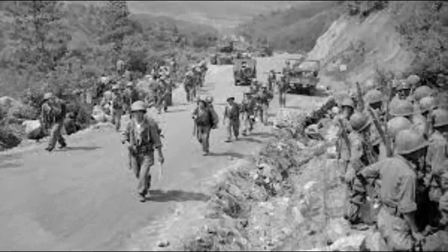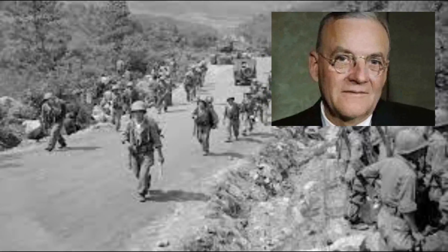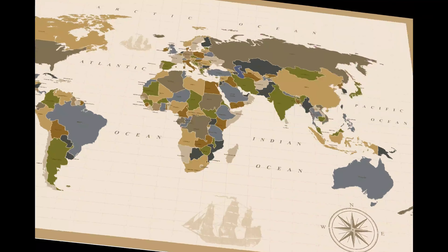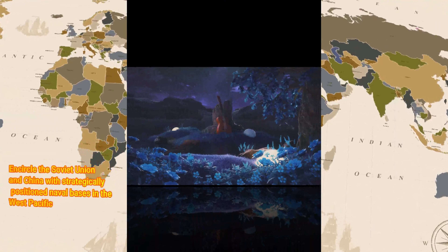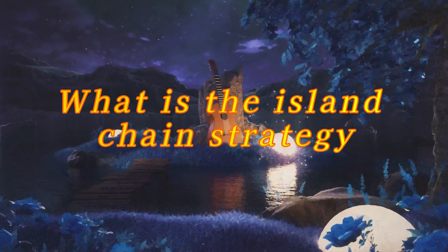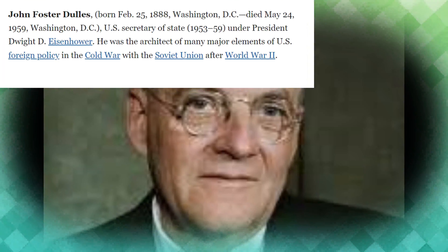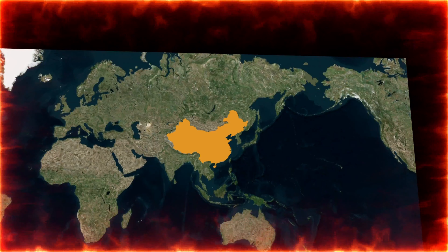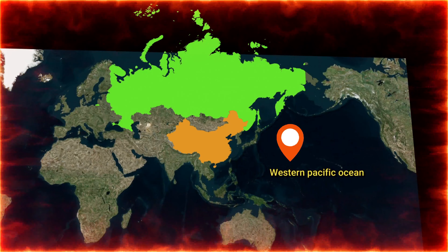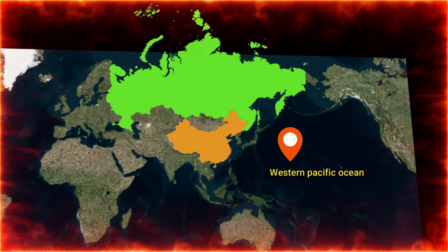Originating in 1951 during the Korean War, this maritime containment plan was conceptualized by American statesman John Foster Dulles, aimed at surrounding the Soviet Union and China with naval bases in the West Pacific for power projection and to restrict sea access.